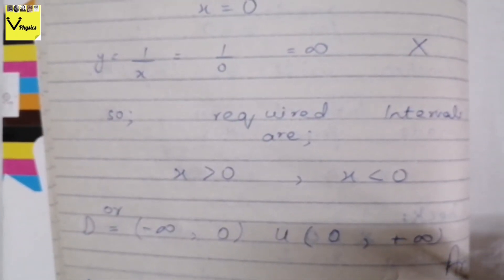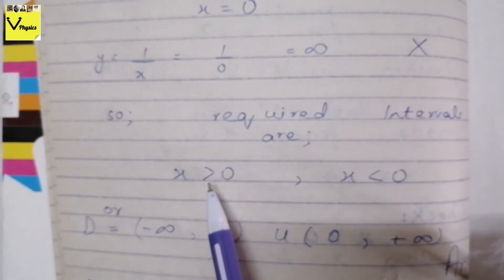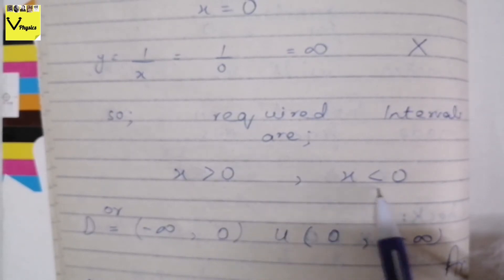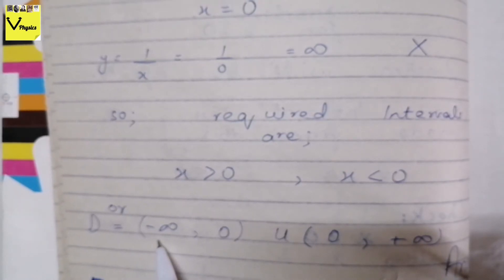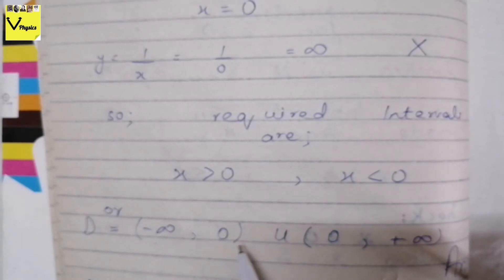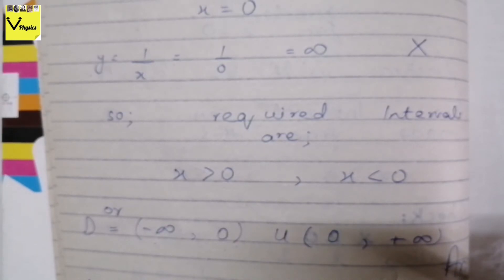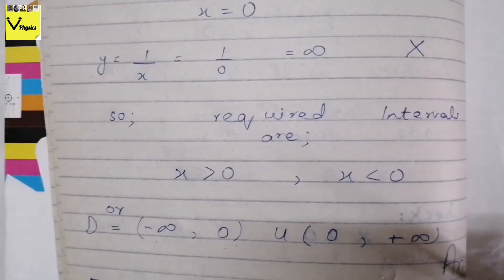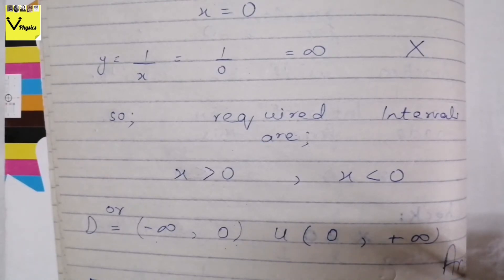The required intervals are x > 0 and x < 0, but not equal to 0. So the domain is (−∞, 0) ∪ (0, +∞). We use open brackets around 0 on both sides since 0 is not included. All values in this range except 0 are included in the domain.